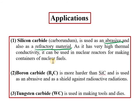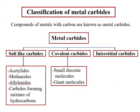To summarize the main classification: salt-like carbides, covalent carbides, and interstitial carbides. Salt-like carbides can be further classified on the basis of their hydrolysis products. Covalent carbides are classified into small discrete molecules and giant molecules, and these p-block elements form covalent carbides.